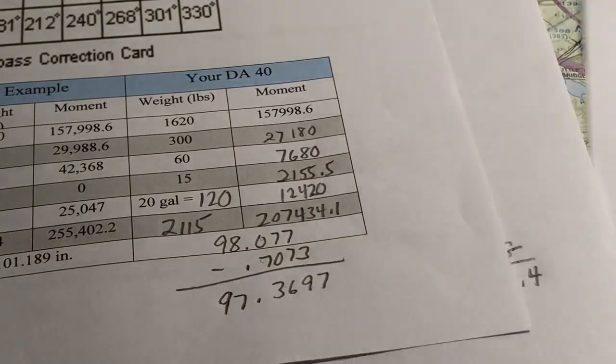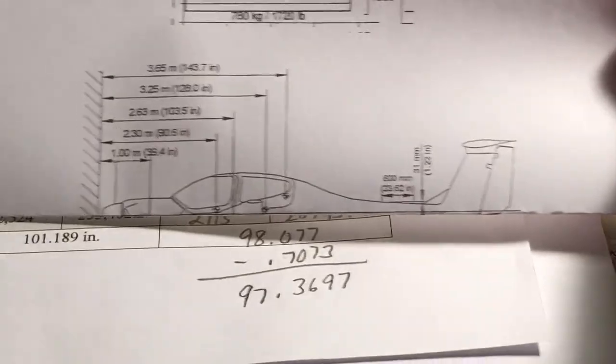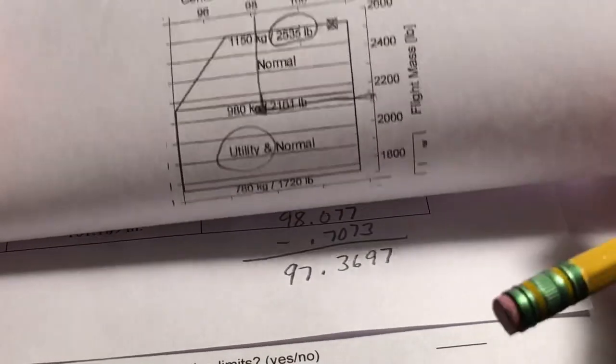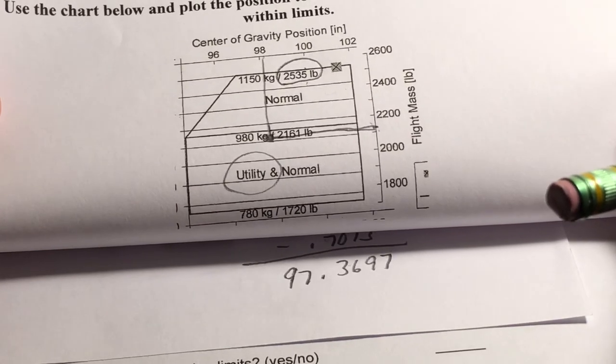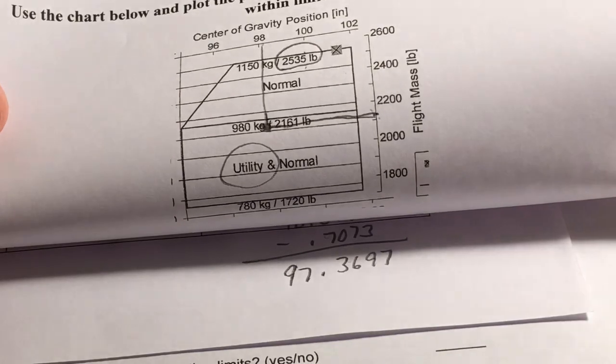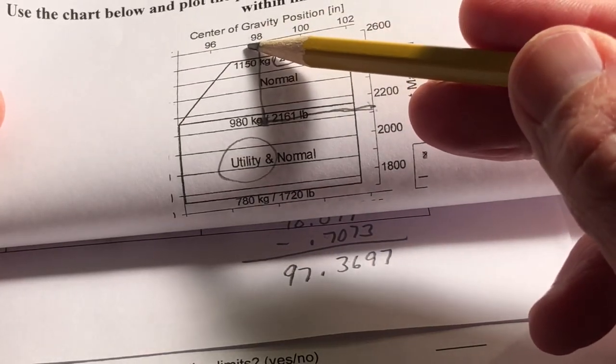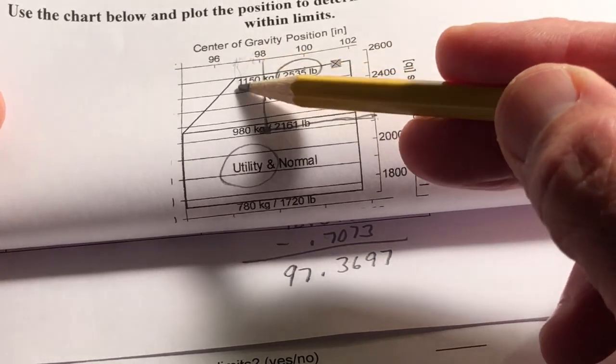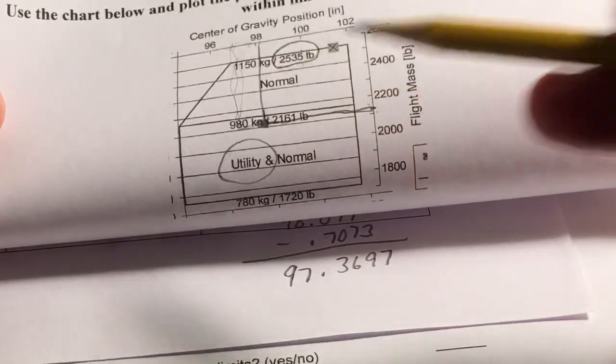And if we look at the center of gravity envelope, we can see that 97.3697 is still within the center of gravity. 97.3697 is probably right about there. So if we draw our line straight down to the weight, we're still well within the center of gravity. And that's how you do the weight shift calculation.